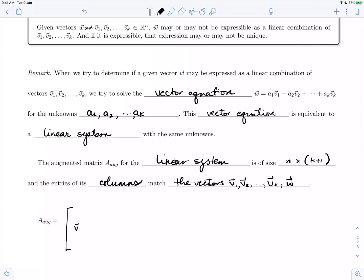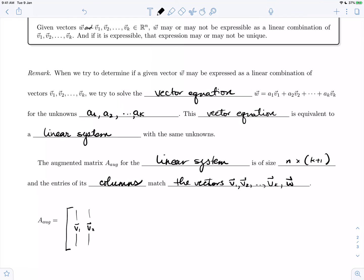So the column v1 looks like the first column of the matrix, v2 the entries become the second column, then v3, and so on, with vk being the last column before the augmentation bar, and afterwards we have the vector entries of w.